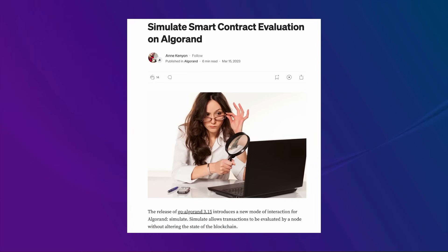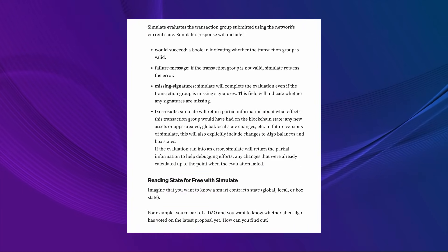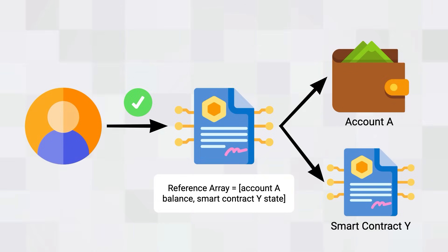Now, this restriction may seem like a strong limitation, but most smart contracts know in advance what resources they need to access to be functional. So by explicitly specifying the resources the transaction can access, smart contract calls can be properly executed in a fast manner. Also, with a recent update to the simulate endpoint — an endpoint that devs can use to simulate transactions without actually sending the transaction to the Algorand network — Algorand smart contracts can now automatically detect what resources they need and include all the resources they will access in the reference array for you.